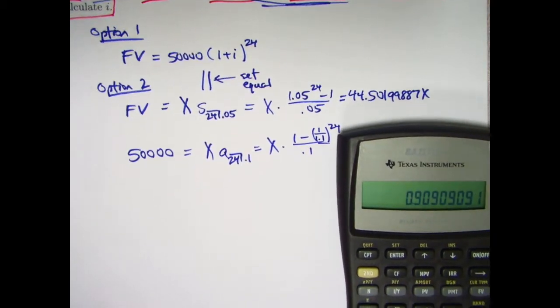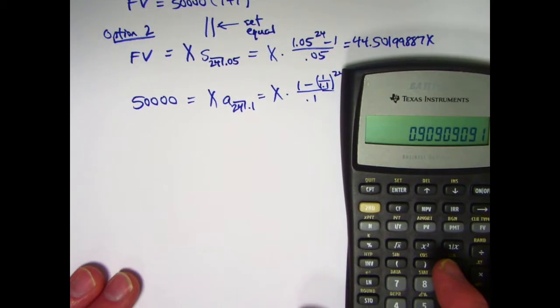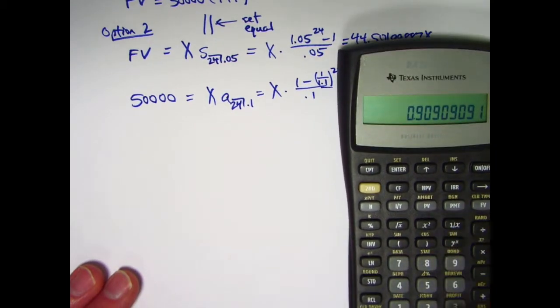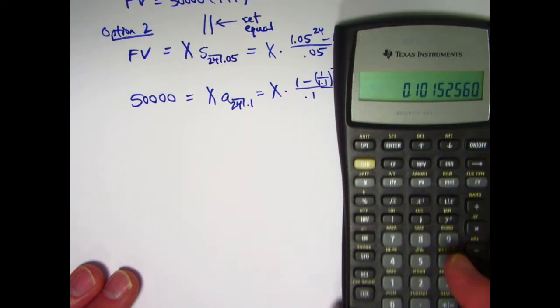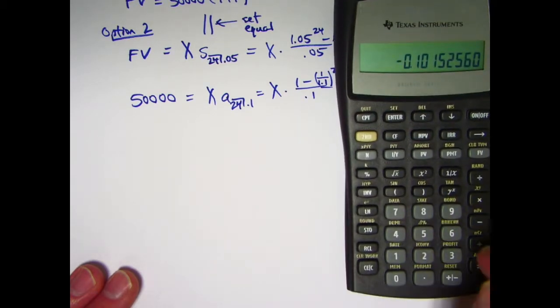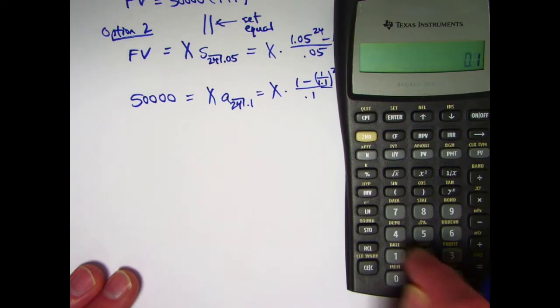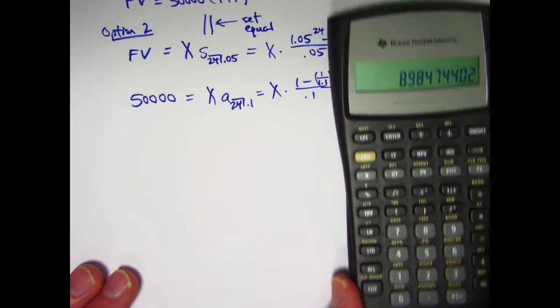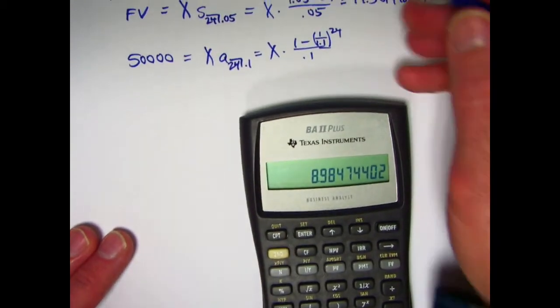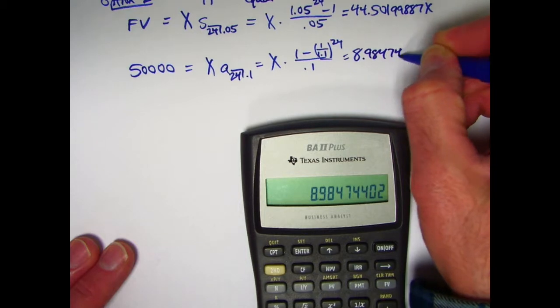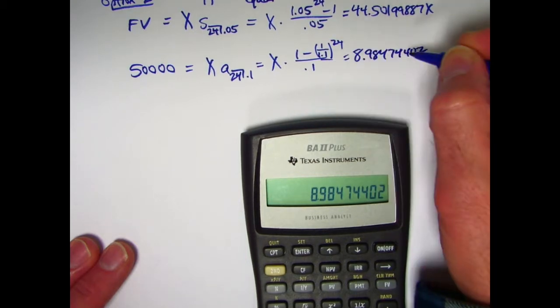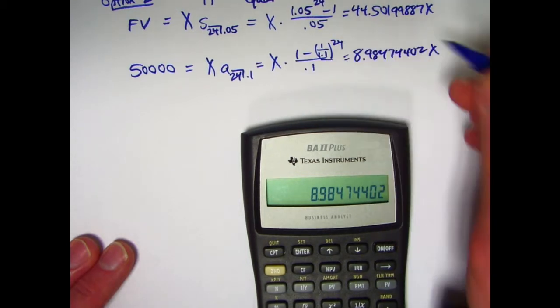The reciprocal of 1.1 is 0.90 repeating. That is what V is. We raise that to the 24th power. Get this. Subtract that from 1. Get that. Divide by 0.1. Here we go. We get 8.98474402 for that quantity, that present value, times X. That must equal 50,000.